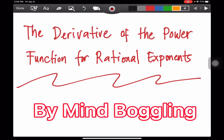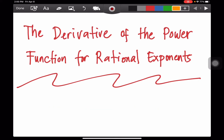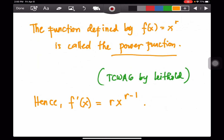Good afternoon! We are now going to discuss the derivative of the power function for rational exponents. The function defined by f(x) = x to the r is called the power function, from Calculus with Analytic Geometry (TCWAG) by Lighthold. The derivative of the power function is r times x to the r minus 1.